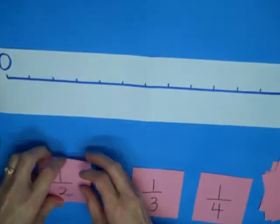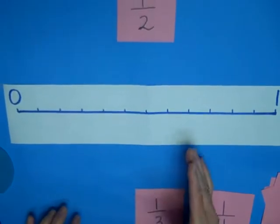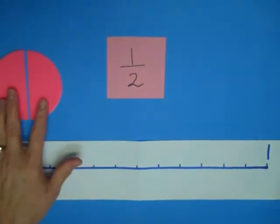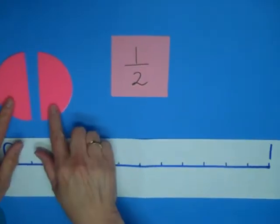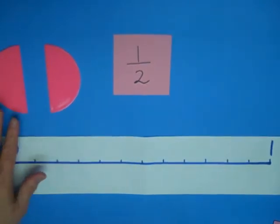So, if this is our number line and we want to show what does one-half look like, we can go back to our three-dimensional model. Here's our fraction circle and if we cut it in half, we get, if we cut it into two parts, we get a half.